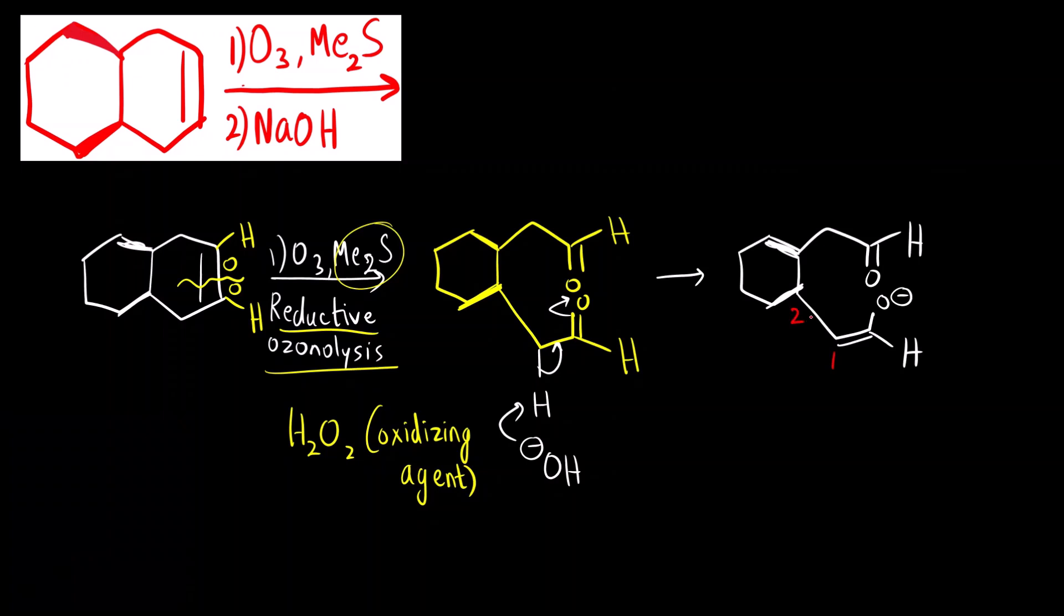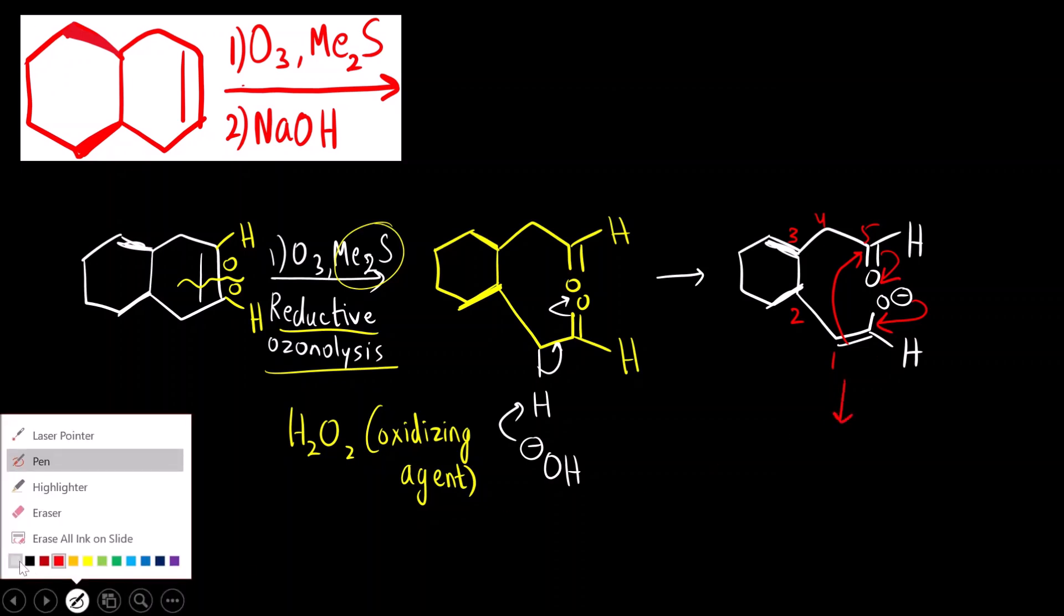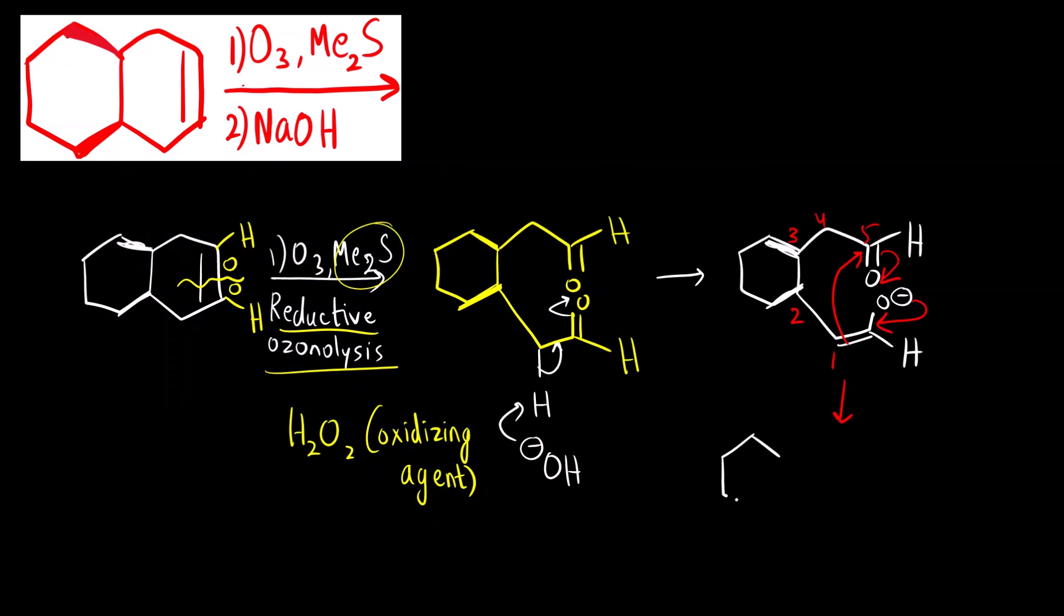What is the next step? How many membered ring will be formed? 1, 2, 3, 4 and 5. This will come here. This double bond will attack here at the electron deficient carbonyl carbon and this will open up. What we will get is a 6 membered ring.